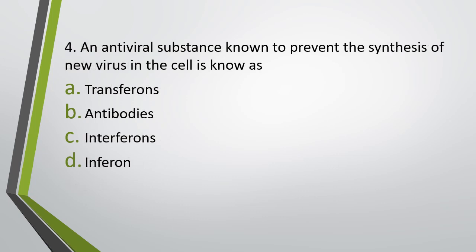Question number four: An antiviral substance known to prevent synthesis of new viruses in cells is known as — (a) transferon, (b) antibodies, (c) interferon, (d) inferon. The antiviral substance that prevents synthesis of new viruses in cells — correct answer is option C: interferons.